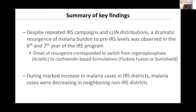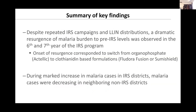In summary, despite repeated IRS campaigns and LLIN distribution, a dramatic resurgence of malaria burden to pre-IRS levels was observed in the sixth and seventh year of the IRS program in Uganda. This corresponded to the shift from organophosphate to clothianidine-based formulations — Fludora Fusion and SumiShield. During the marked increase in malaria cases in IRS districts, we are actually observing declines in neighboring non-IRS districts. The question is: why is this? Could it be declining effectiveness of IRS in general, or is it a problem with the formulations?